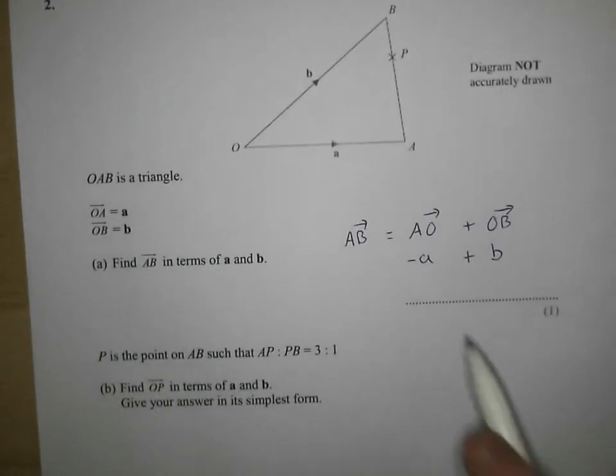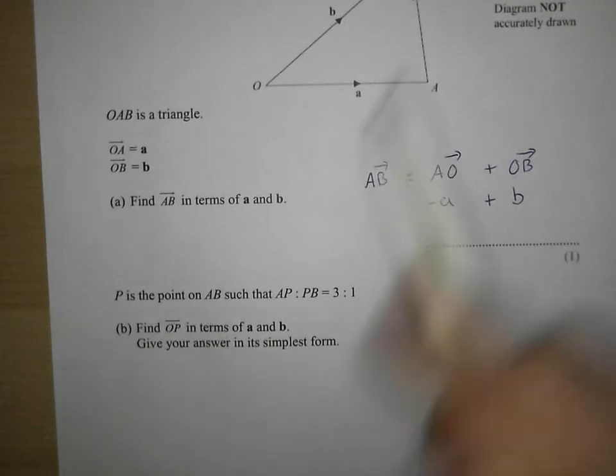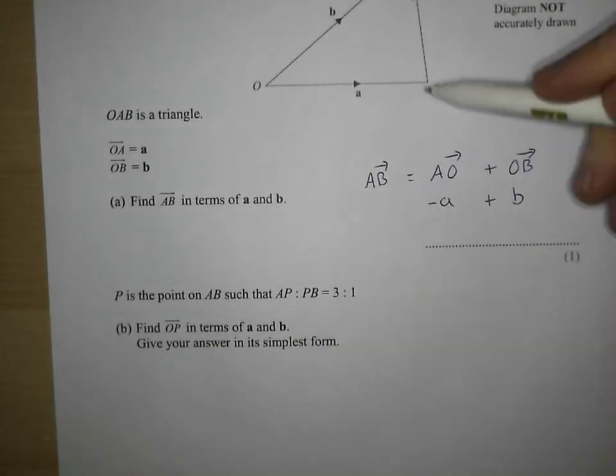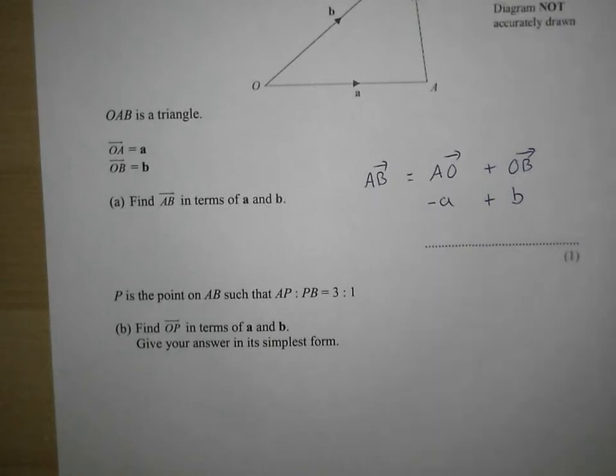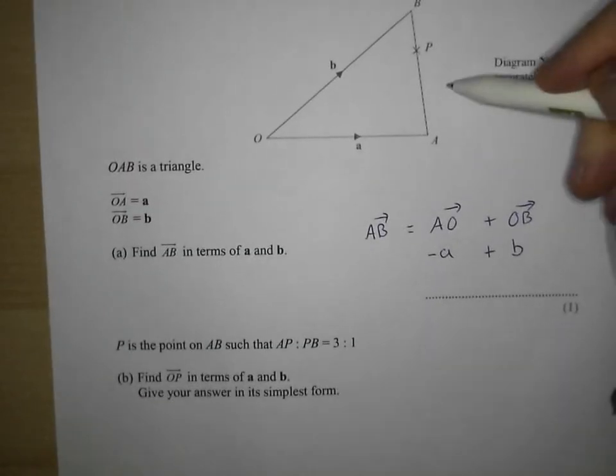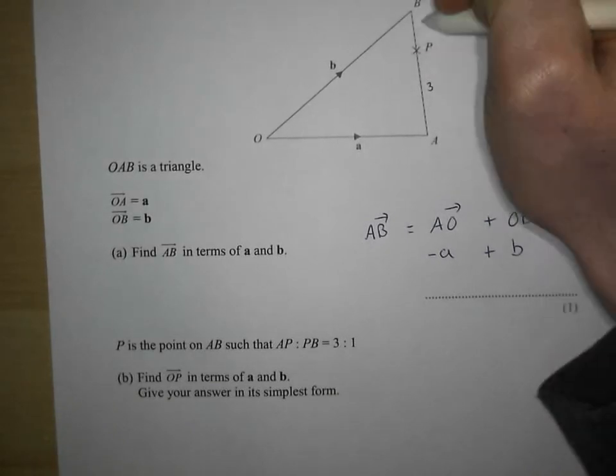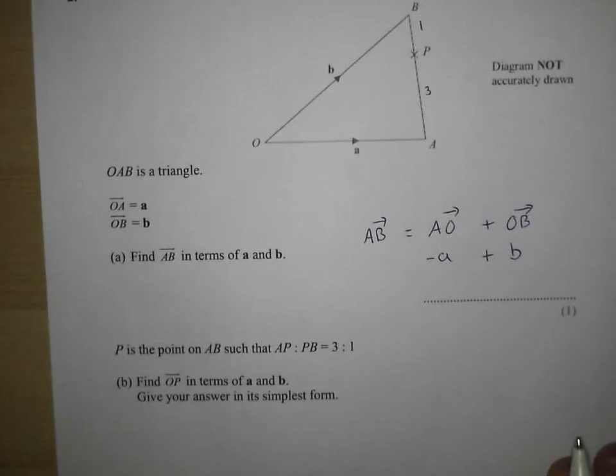They lure you in with a nice one, then mess you over with this. So point P is the point on AB such that AP and PB is in the ratio 3 to 1. So AP and PB is 3 to 1. So that is three times longer than that bit. That's going to be important.